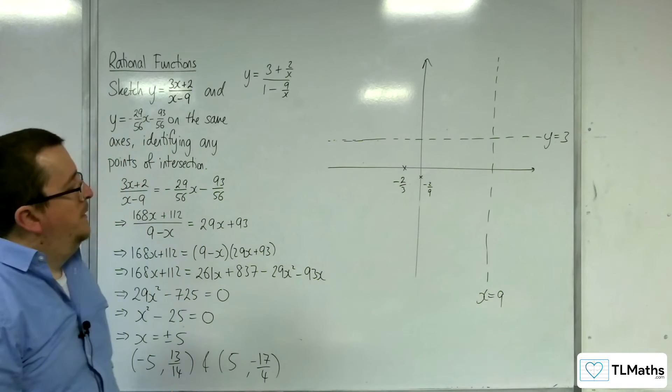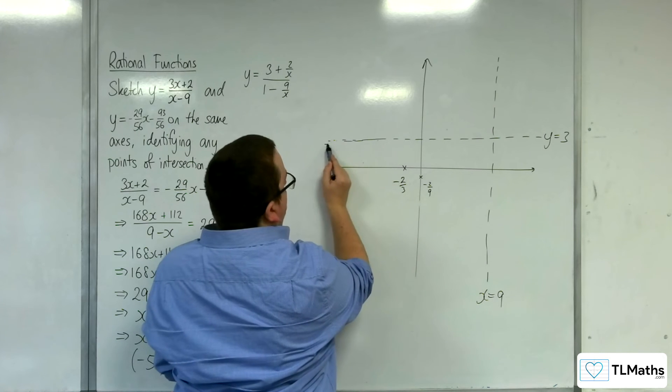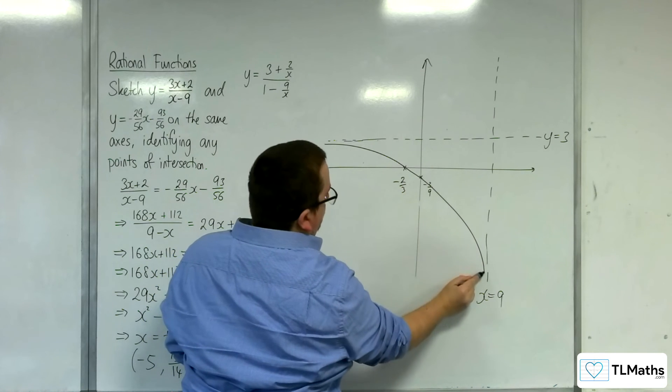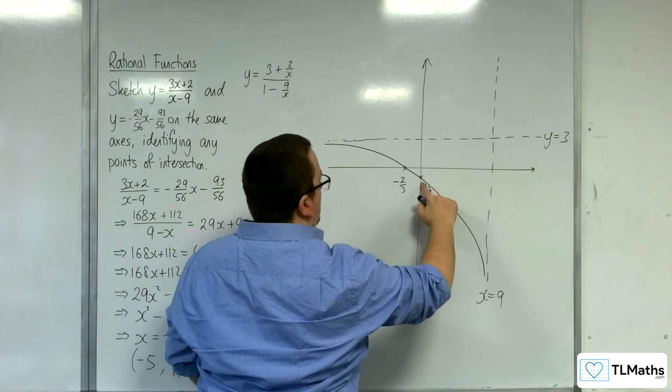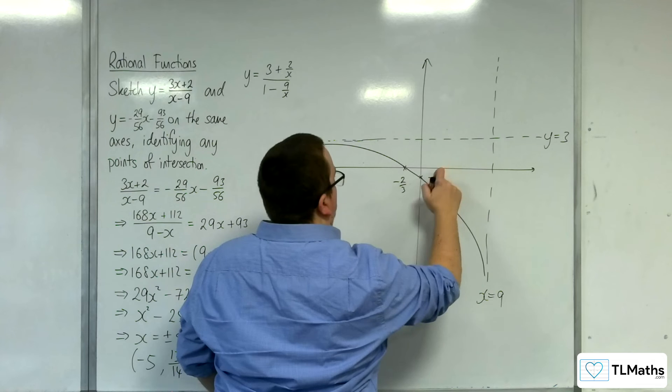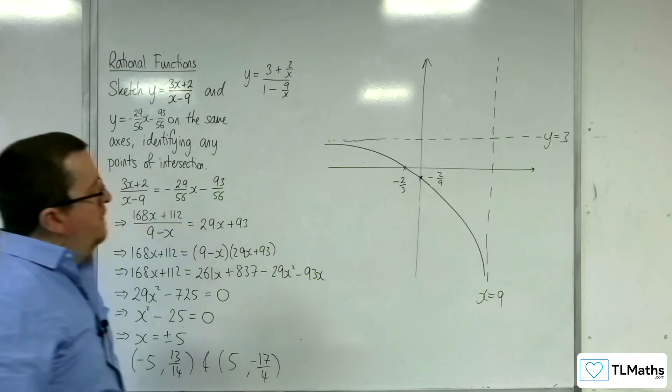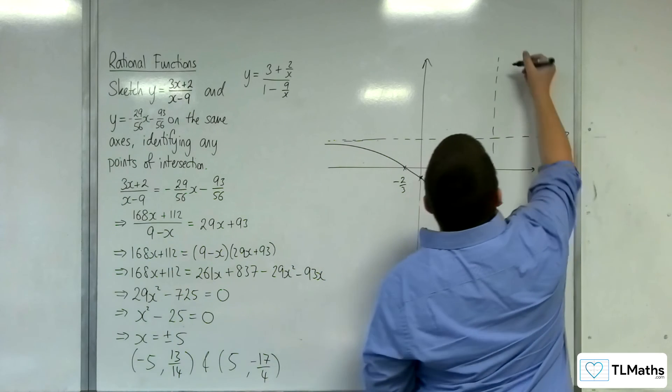So my curve is going to go that way. Let's bring the minus 2 ninths up here. And the rest of the graph is up here.